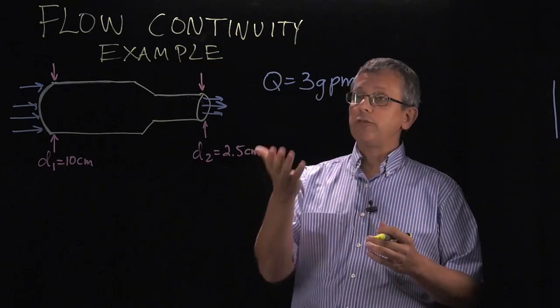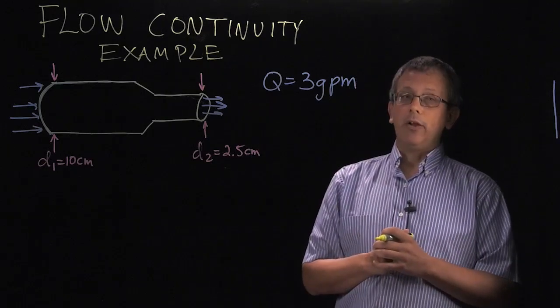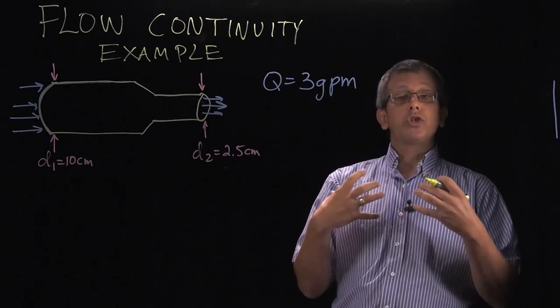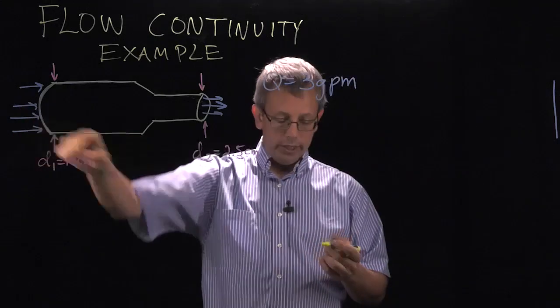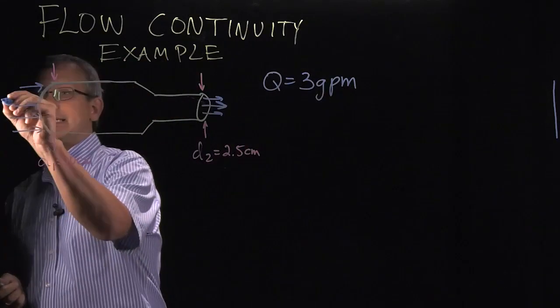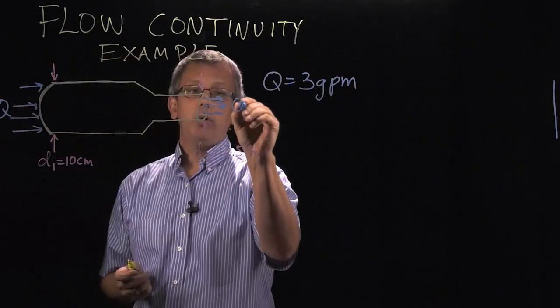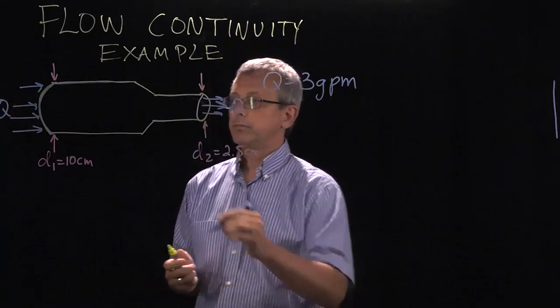In this case, the flow in the hose is given as 3 gallons per minute. Notice we're assuming continuity that the flow in, Q over here on this side, the flow in is the same as the flow out.